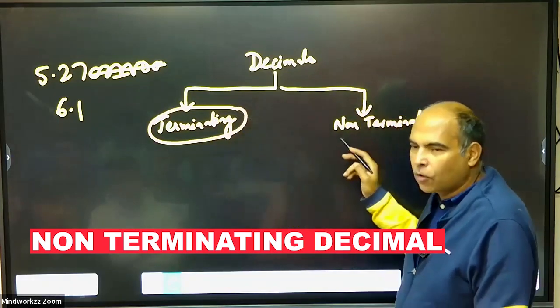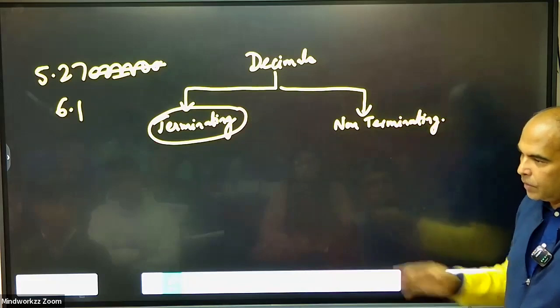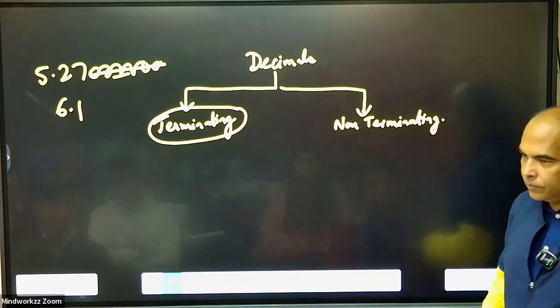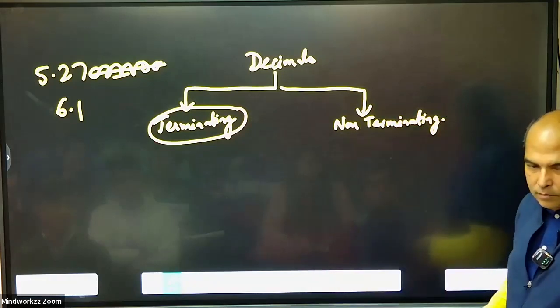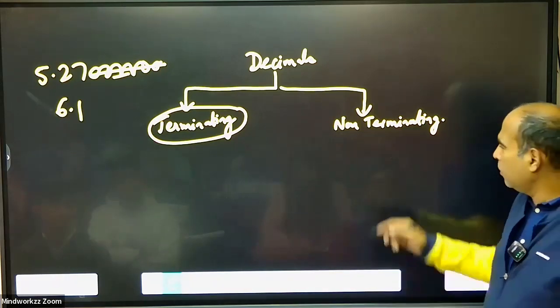Non-terminating decimals means they always have a next term. They never terminate. You can approximate them but you cannot terminate them. So non-terminating has two types.